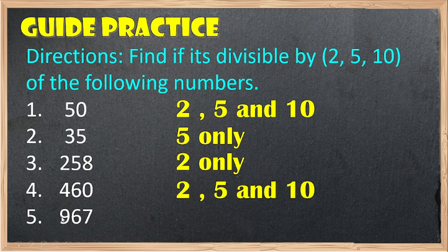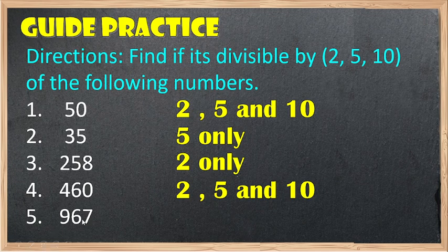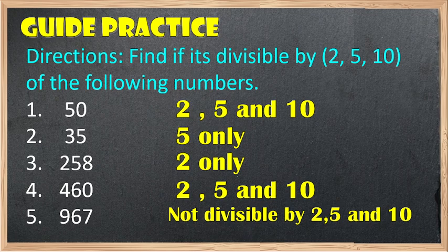Number 5: 967. Divisible by 2 — no, because the last digit is 7, which is not even. Divisible by 5 — no, because it does not end with 0 or 5. Divisible by 10 — no, because it does not end with 0. Therefore, 967 is not divisible by 2, 5, or 10.